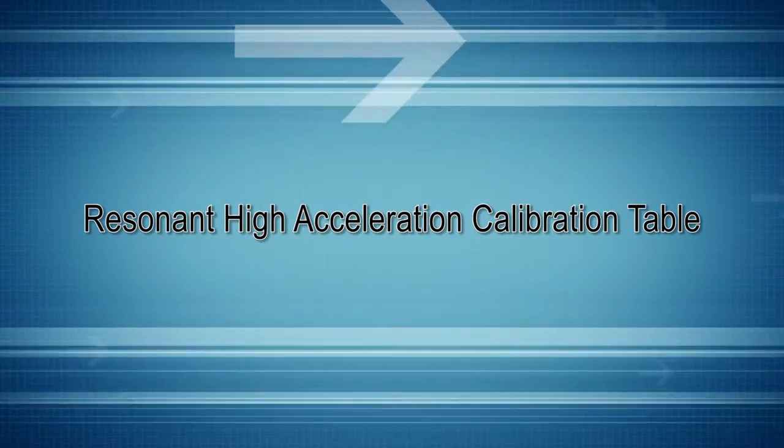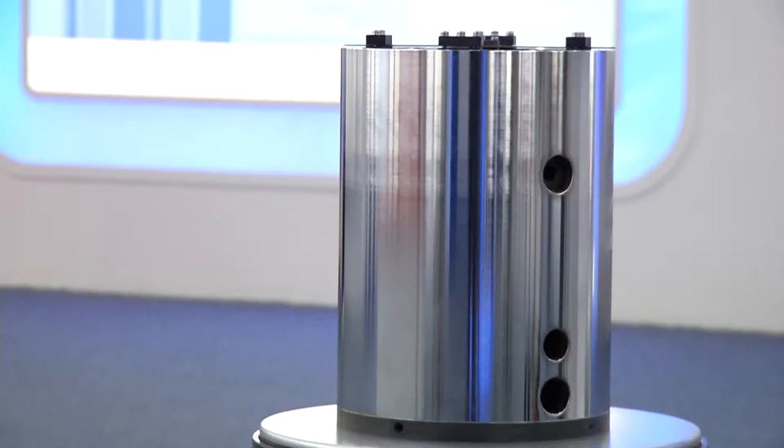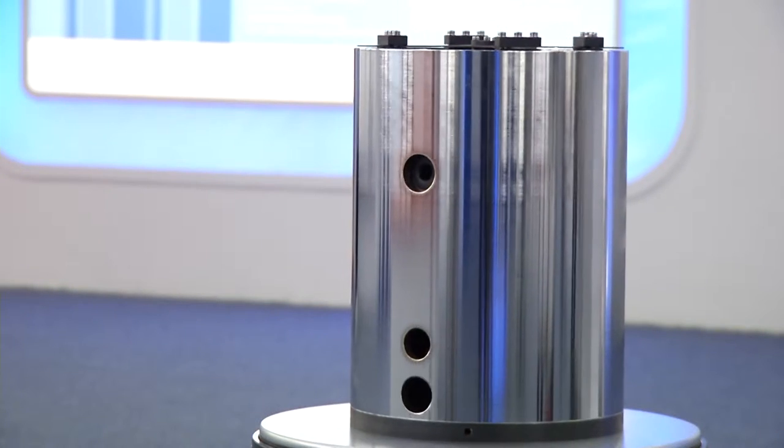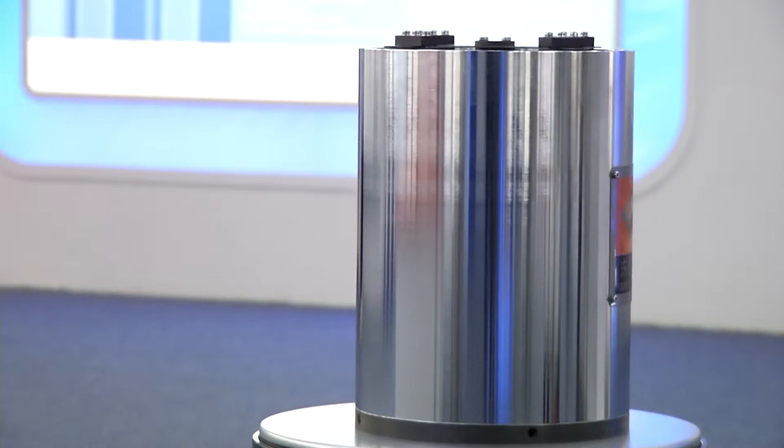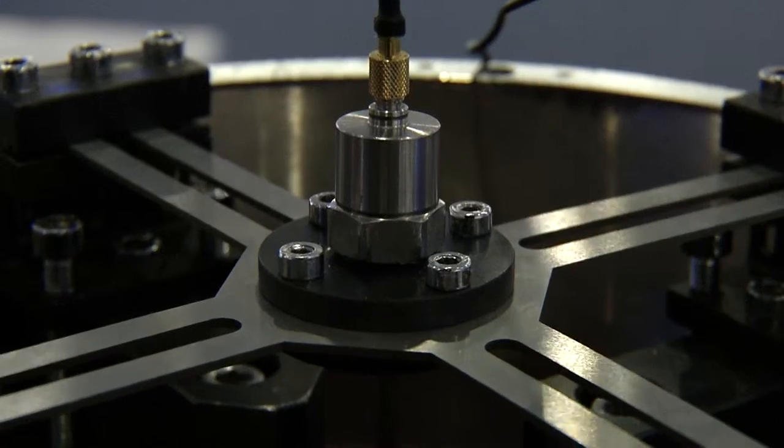Resonant High Acceleration Calibration Table is a precision calibration device. Its maximum acceleration is up to 500 G. Usable frequency range is from 10 Hz to 500 Hz.